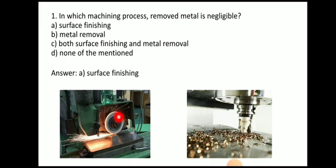In the grinding process, very less material is removed — this is different from the drilling process where you can see the maximum material is removed from the workpiece. So in surface finishing process, such as grinding, removed metal is very negligible.